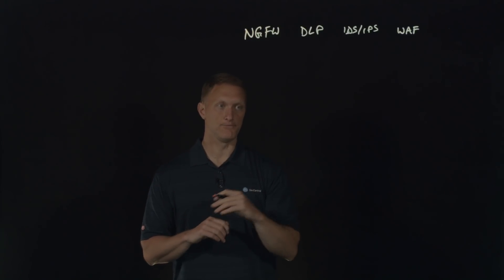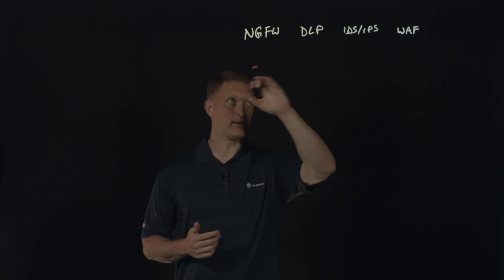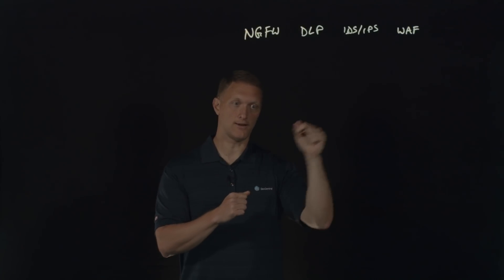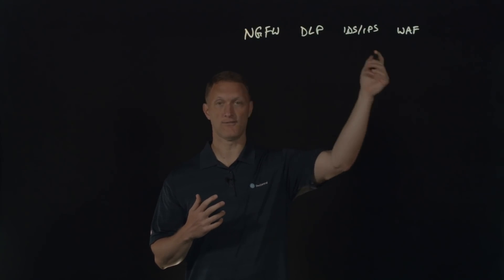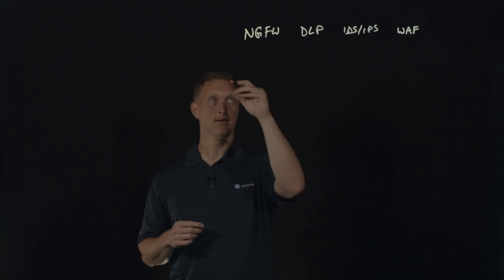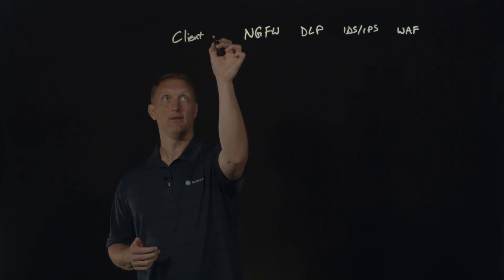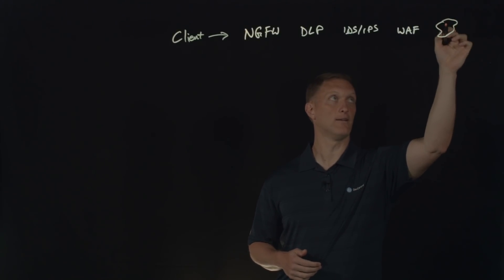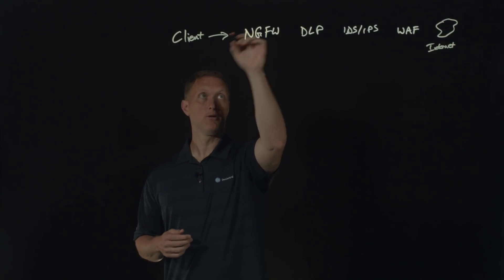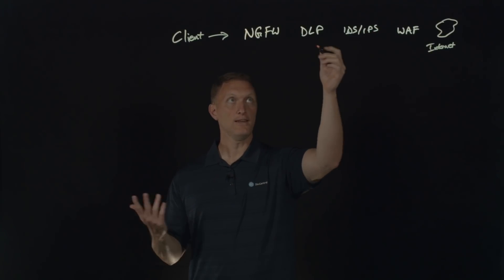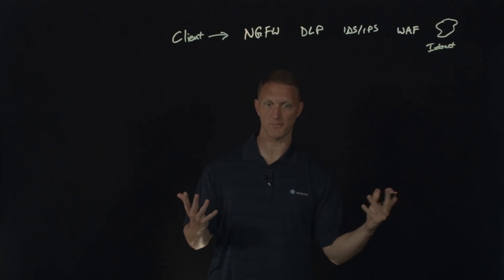One of the things that happens with some security devices that say they do all this stuff in one box is what's called daisy chaining. Even if they're in one box, when you crack the lid and look inside, what's effectively happening is each of these devices is daisy chained together inside the one big uber device. The problem with that is — let's say you have a client going out to an internet website — the traffic will go through each device individually, and if any of these devices goes down, the entire chain breaks.